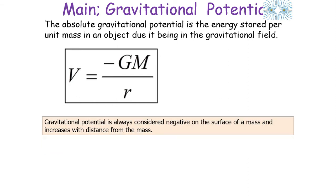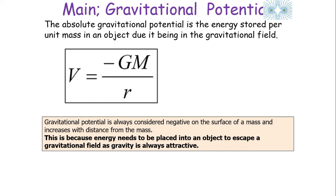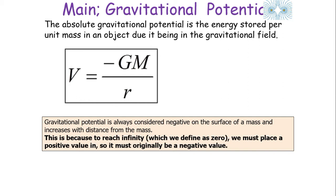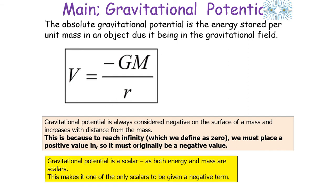Gravitational potential is always negative on the surface of a mass and increases with distance from the mass. This is a very common examination question. It's because energy needs to be placed into an object to escape a gravitational field, since gravity is always attractive. So if you are in a gravitational field and need to get out, energy always needs to be supplied. This means that to reach infinity — which we've defined as zero — we've got to place a positive value of energy in, so the potential must originally be negative. Gravitational potential is a scalar because both energy and mass are scalars, making it one of the only scalars in physics given a negative value, though it has no direction.